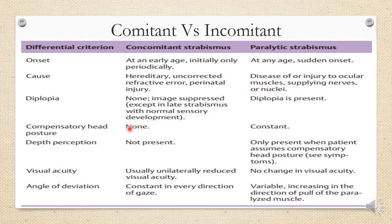Compensatory abnormal head posture is not required in concomitant cases as there is no diplopia, whereas it is constantly present in paralytic strabismus because sensory adaptation is not possible, so patients make motor adaptations to decrease the deviation. Depth perception is not present in concomitant strabismus because of suppression or other sensory adaptations, but it is present in patients with a compensatory head posture. If there is no diplopia at a particular gaze, depth perception is present and the various tests for assessing stereopsis will be positive.